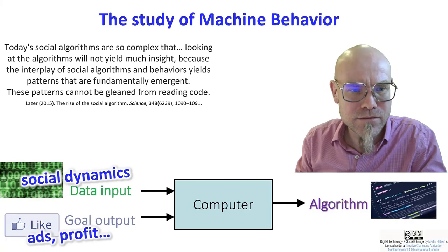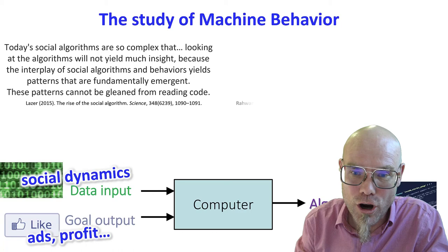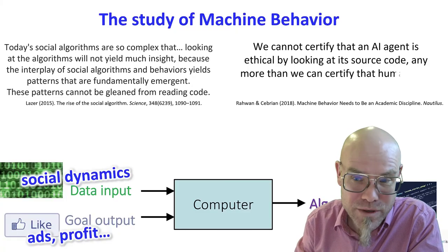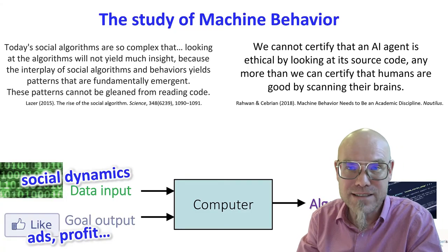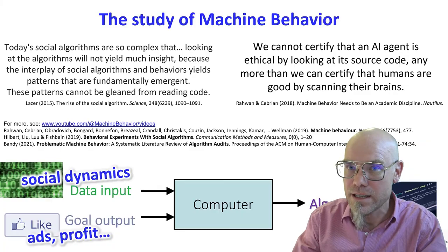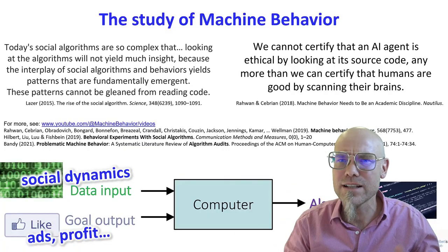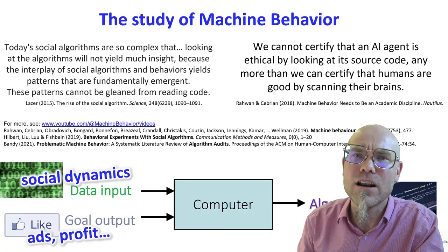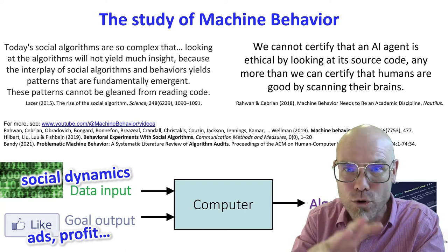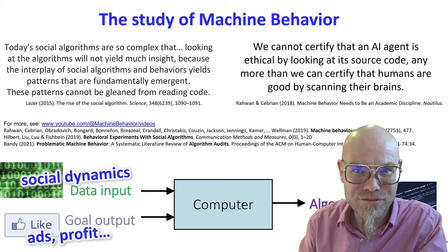How can you study what these social algorithms do? You study them like you study humans — you run them through a lab and audit them. We cannot certify that an AI agent is ethical by looking at its source code, any more than we can certify that humans are good by scanning their brains. All we can do is study their behavior. That leads to the field of algorithmic audits — an entirely new field that will need a lot of attention in the decades to come to understand what our social algorithms, this mix of social and algorithmic dynamics, actually produce.